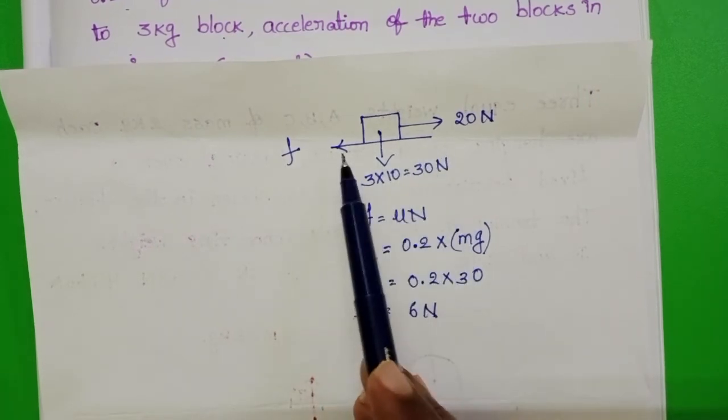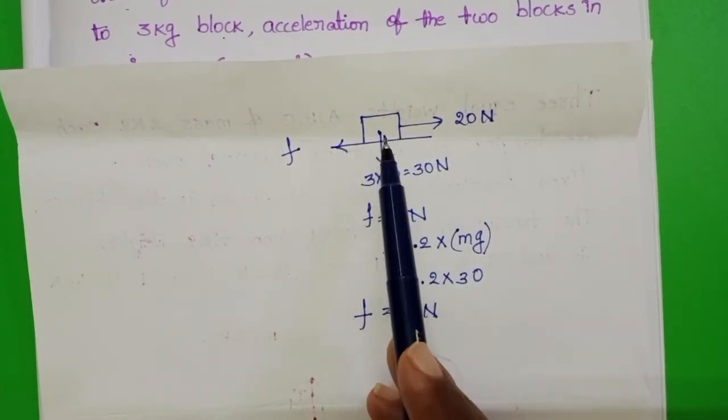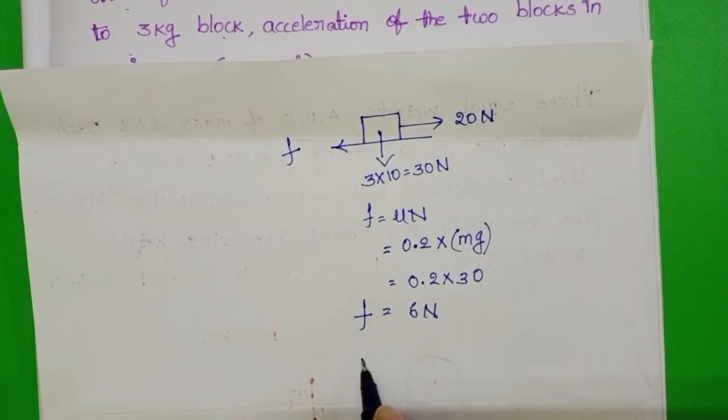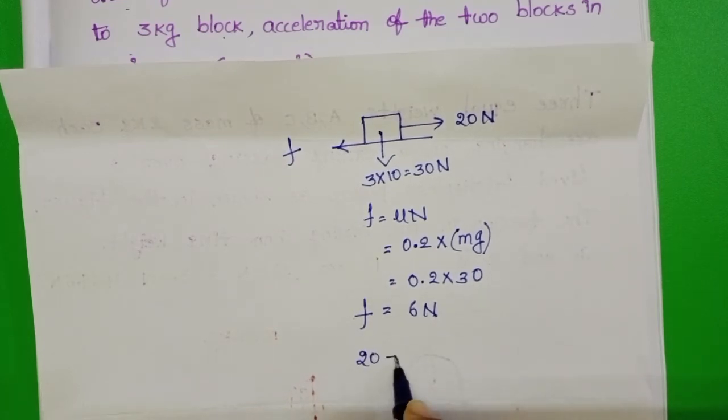Due to the difference of these 2 forces, this block accelerates in forward direction. So, 20 minus F equals 3A.